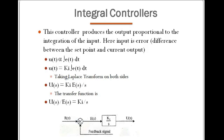So u(t) is directly proportional to the integral of e(t). To remove the proportional symbol and introduce the equivalent, we introduce a constant called ki — ki stands for integral gain. So u(t) equals ki times the integral of e(t) dt. Taking the Laplace transform on both sides, this becomes U(s) equals ki times E(s) divided by s, because the Laplace transform of integration is one over s.